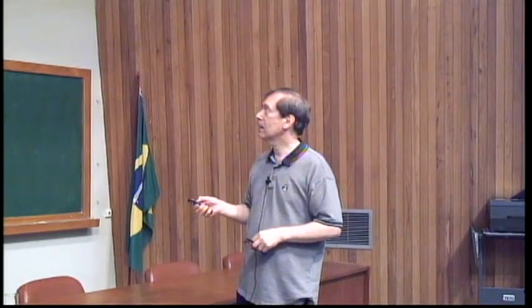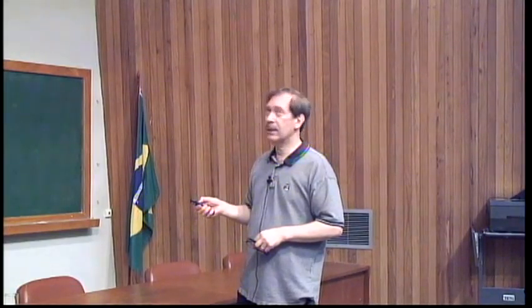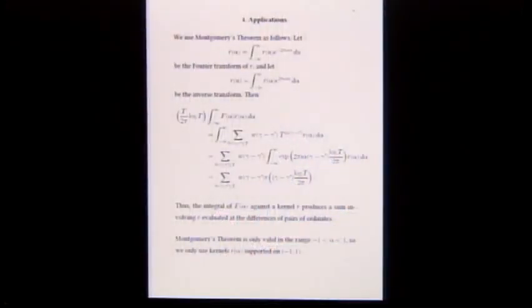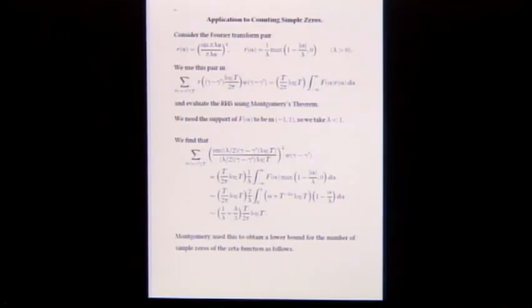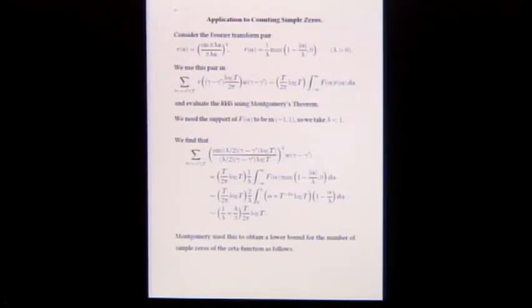The point is: whenever you have a test function you want to evaluate at differences of ordinates, you can do it by integrating the transform of the test function against F. We have an expression for F from Montgomery's theorem — spike plus alpha term. But remember, the theorem holds for alpha between minus 1 and 1, so test functions must be supported in that interval. This is a big limitation.